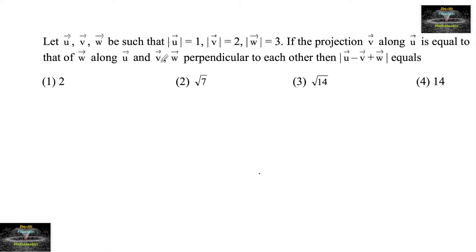Let u, v, w be such that mod u is equal to 1 and mod v is equal to 2 and mod w is equal to 3.